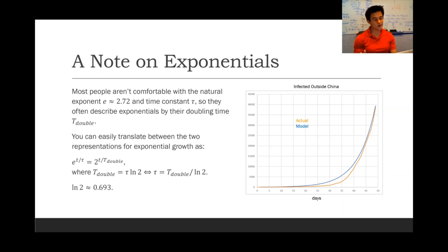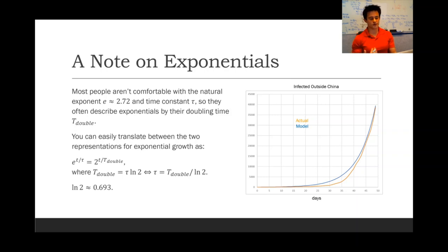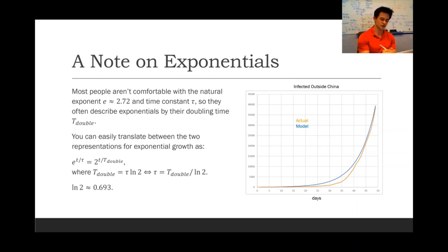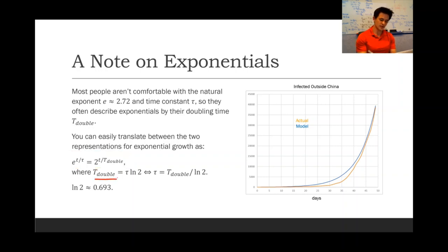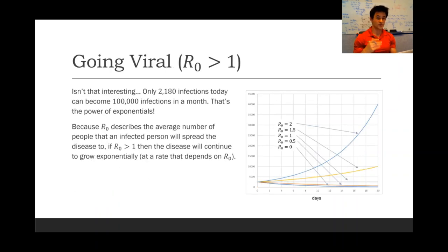Now a quick note about exponentials. Most people aren't comfortable with the natural exponent e, which is about 2.718, and the time constant tau, so they often prefer to describe exponentials by their doubling time t-double. You can easily translate between these two representations: e to the t over tau is equal to 2 to the t over t-double, where the doubling period t-double is equal to tau multiplied by the natural log of 2, which is about 0.693. So that's the power of exponentials — with only 2,200 infections today, you can have 100,000 infections in a month.